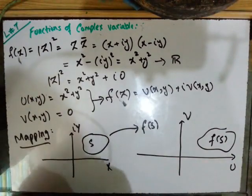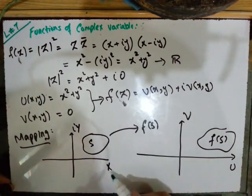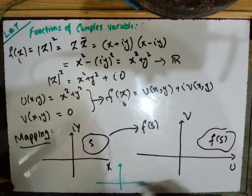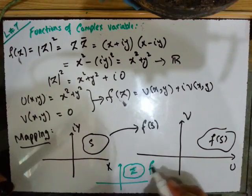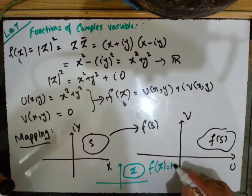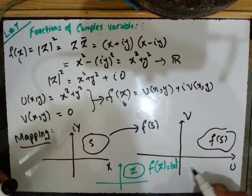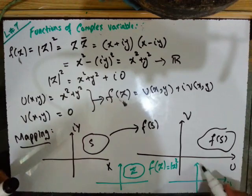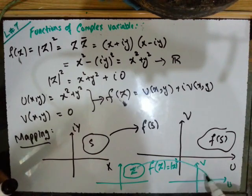Like in the example we just solved — f(z) = |z|² — only a real component came out. If we plot this in the u-v plane, with u as the real axis and v as the imaginary axis, since the imaginary part is zero, all values will map along the u-axis.